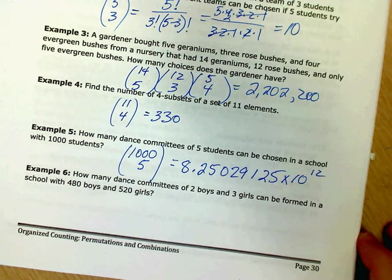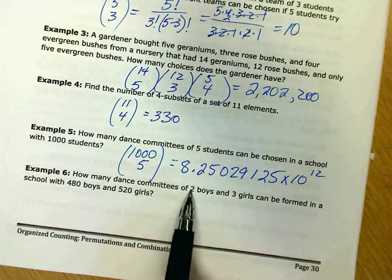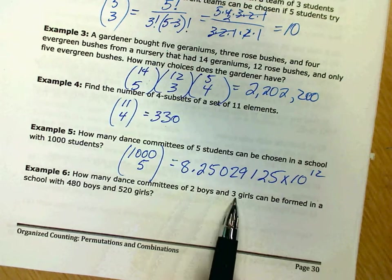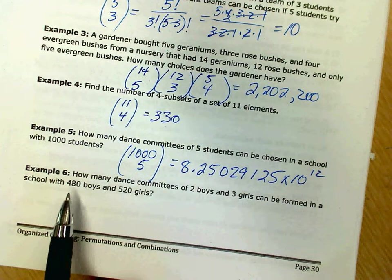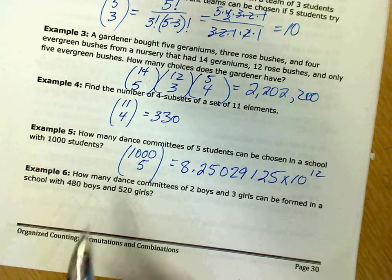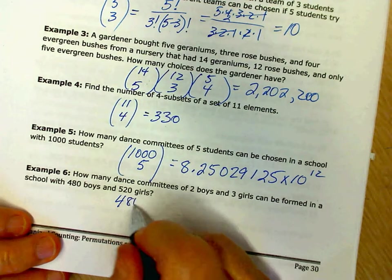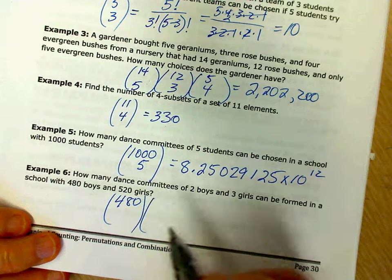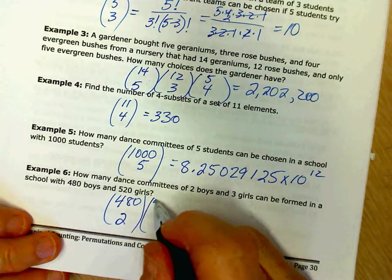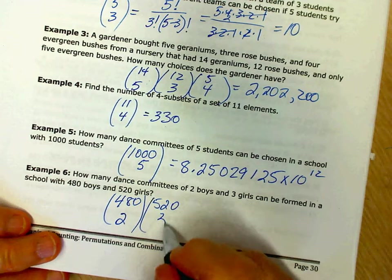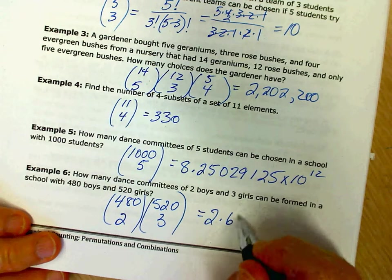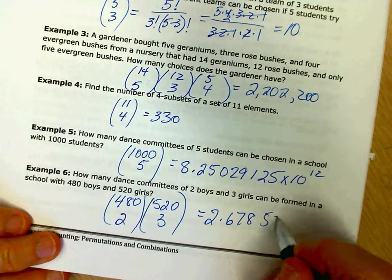How many dance committees of two boys and three girls can be formed in a school with 480 boys and 520 girls? 480 choose two times 520 choose three equals 2.678526614.